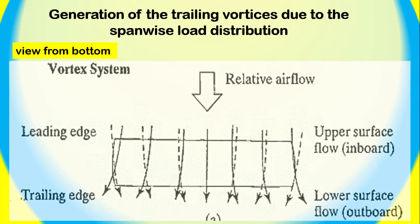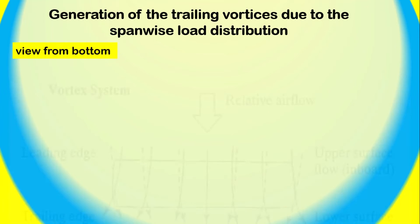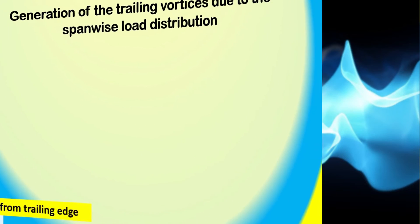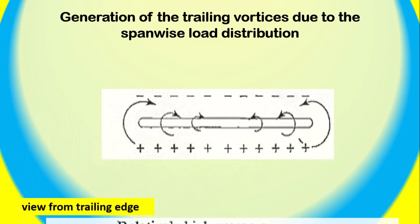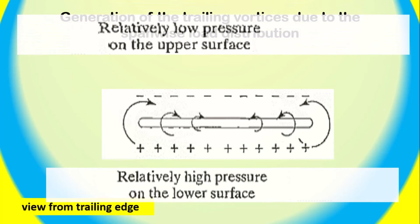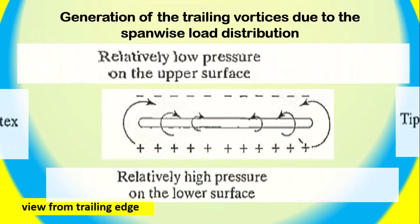Wingtip vortex: The tip vortex is a spiral-shaped flow of air that is created by the wing's lift-inducing pressure difference. As the wing generates lift, the air moving over the upper surface of the wing travels faster than the air moving under the wing. This difference in airspeed causes the air to rotate around the wingtip, forming a vortex.